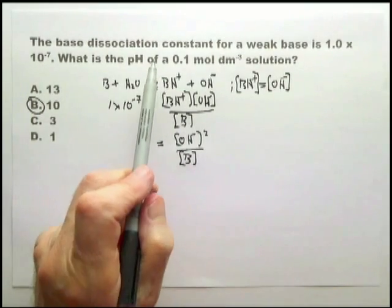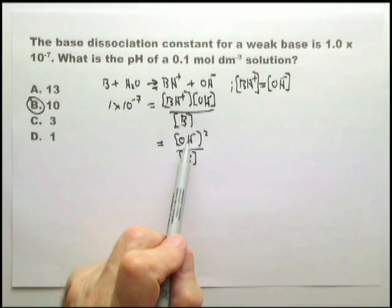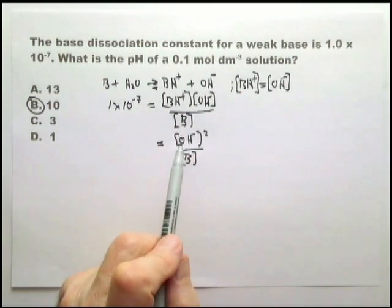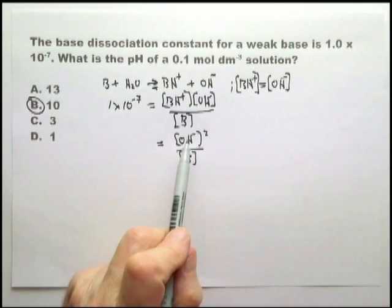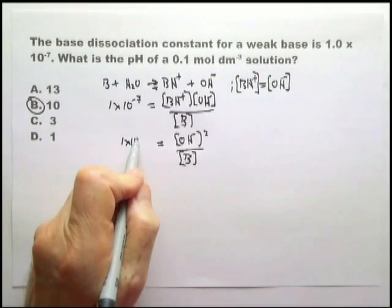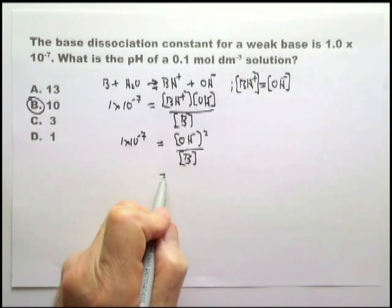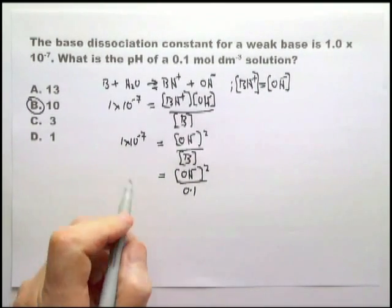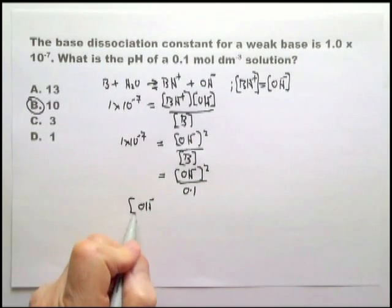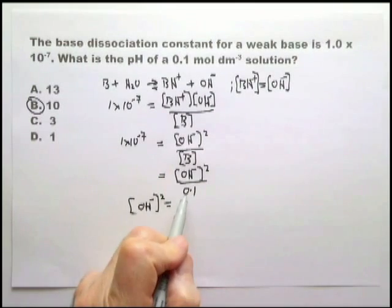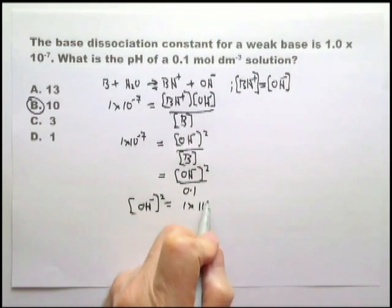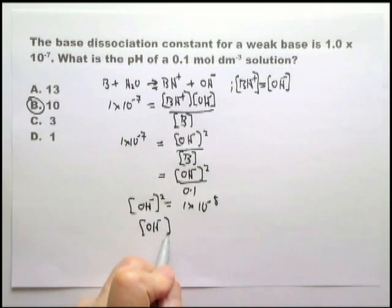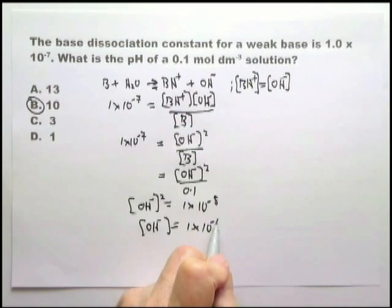And therefore, since we're looking for the concentration of OH minus squared over B. Whenever they're talking about a weak base, it's usually easier to work out the concentration of OH minus. If they talk about a weak acid, then you work out the concentration of H plus. So we're working out the concentration of OH minus because it's a weak base. 1 times 10 to the minus 7, and they actually tell you the concentration of B, which is 0.1. Therefore, OH minus squared equals that times that, which is 1 times 10 to the minus 8. And therefore, the concentration of OH minus equals 1 times 10 to the minus 4.